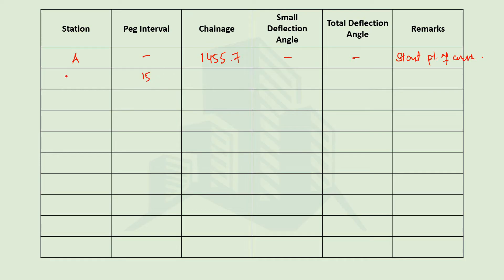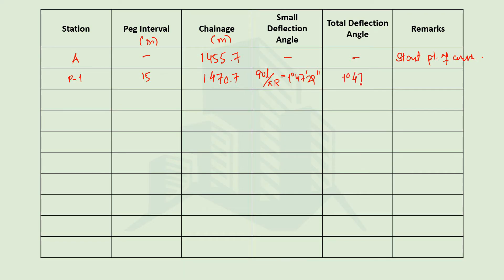The first point on the curve, P1, has a peg interval of 15 meters, giving a chainage of 1470.7 meters. The small deflection angle is calculated using the formula: δ = l/(2πR) × 180°, where l is the peg interval 15 meters and R is 240 meters. This gives a small deflection angle of 1 degree 47 minutes 29 seconds, which is also the total deflection angle for this first point.